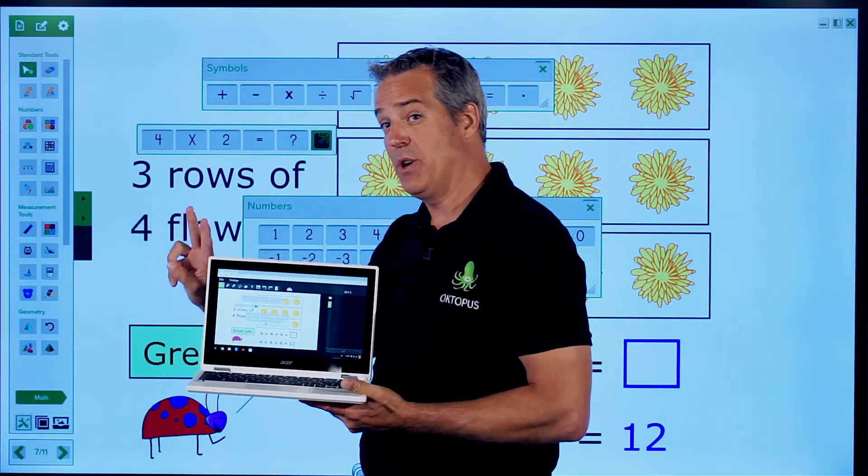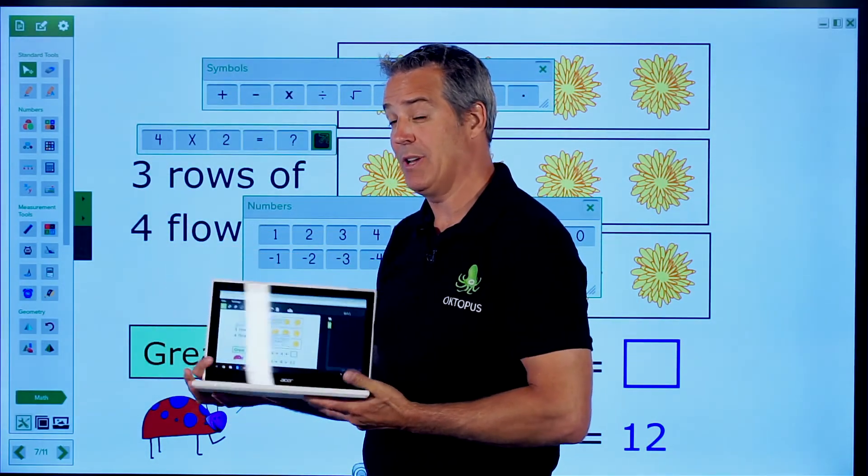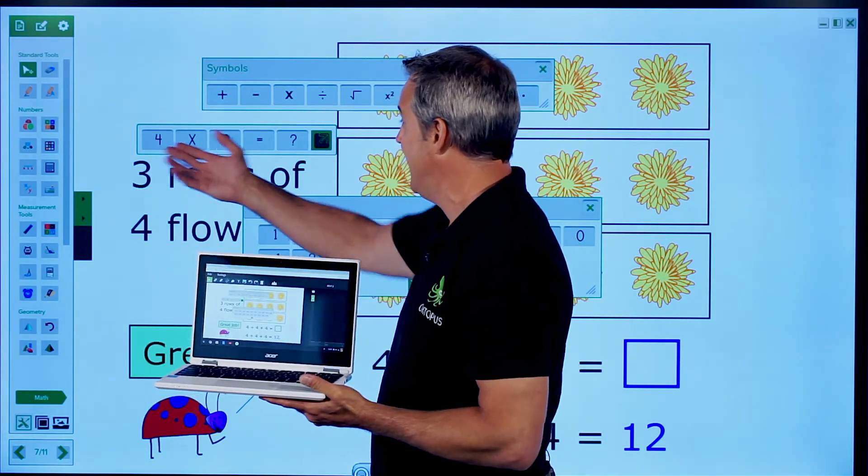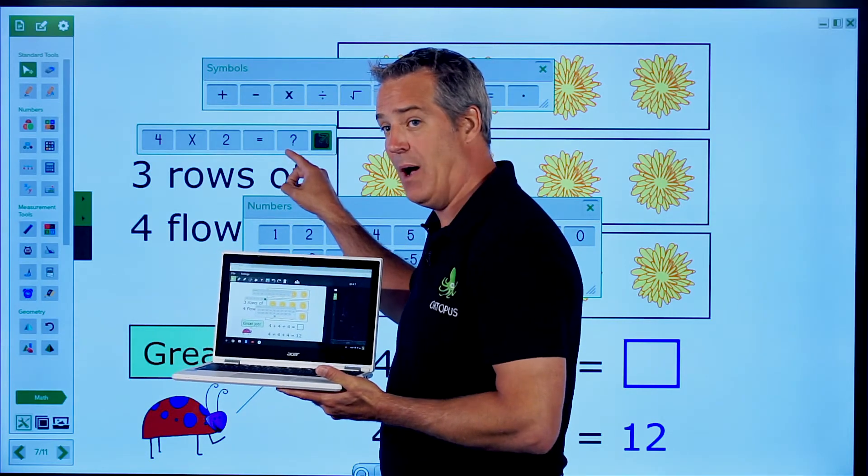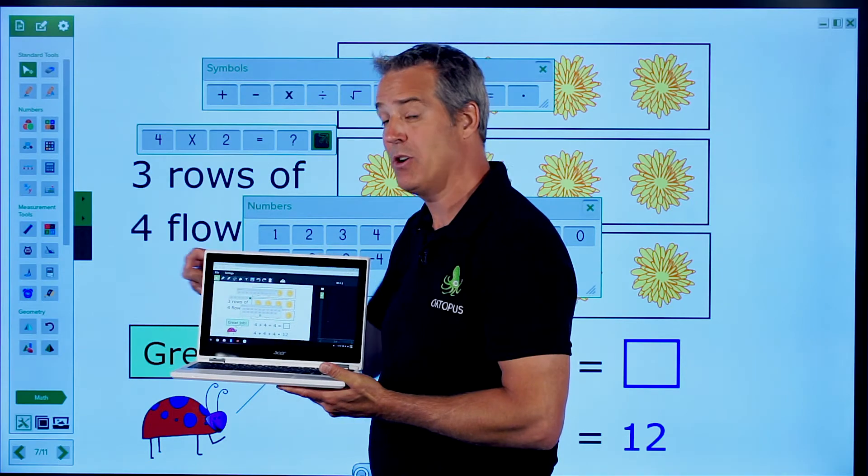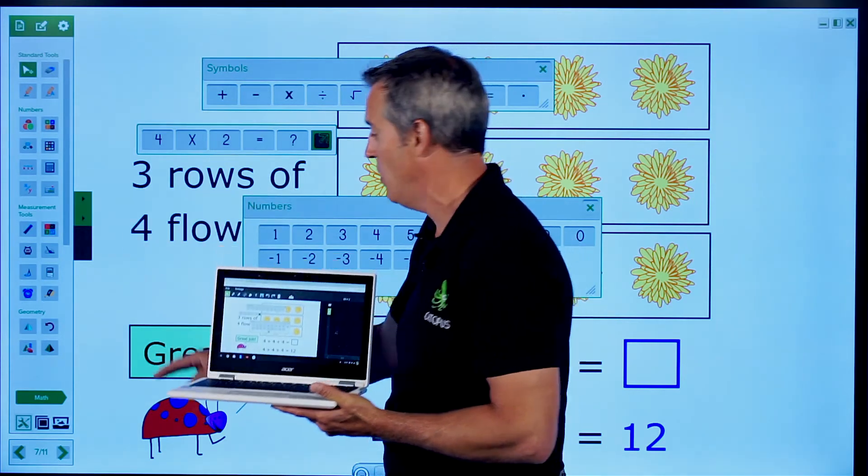So those are two different ways that you can pose questions for instant assessment with your class. You can use the instant polling options in the vote tool section, or you can use any of the widgets that have that arrow out on them. When you press the arrow, it's going to pose a question. If you haven't started a session yet, that will actually prompt you to start a session as well.